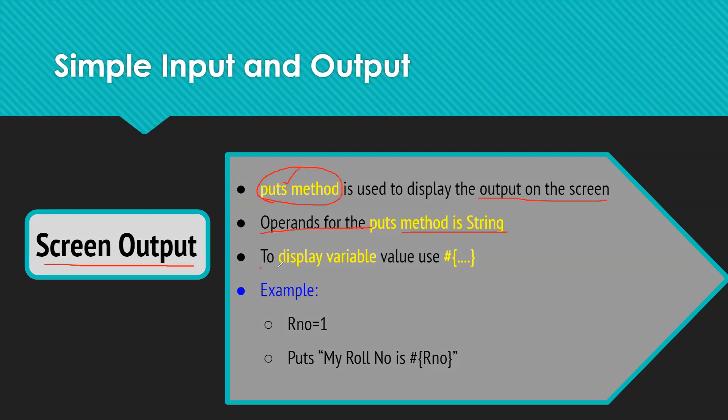To display a variable, when you want to display a variable, you have to use a symbol like hash curly bracket, the name of variable, and again closing curly bracket. So here I have given one example for you: variable is role number and you have given a value as one, and you want to print the value of this variable on your screen.